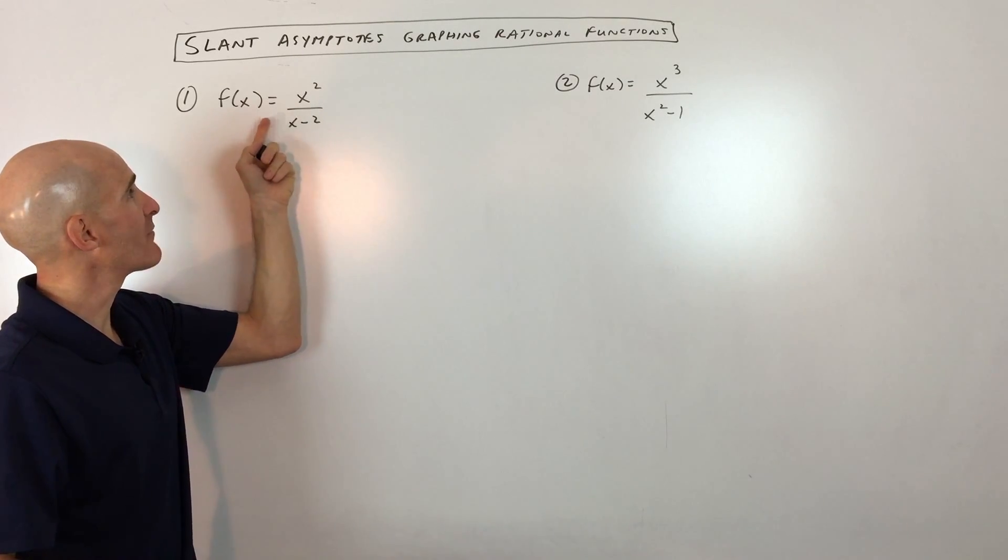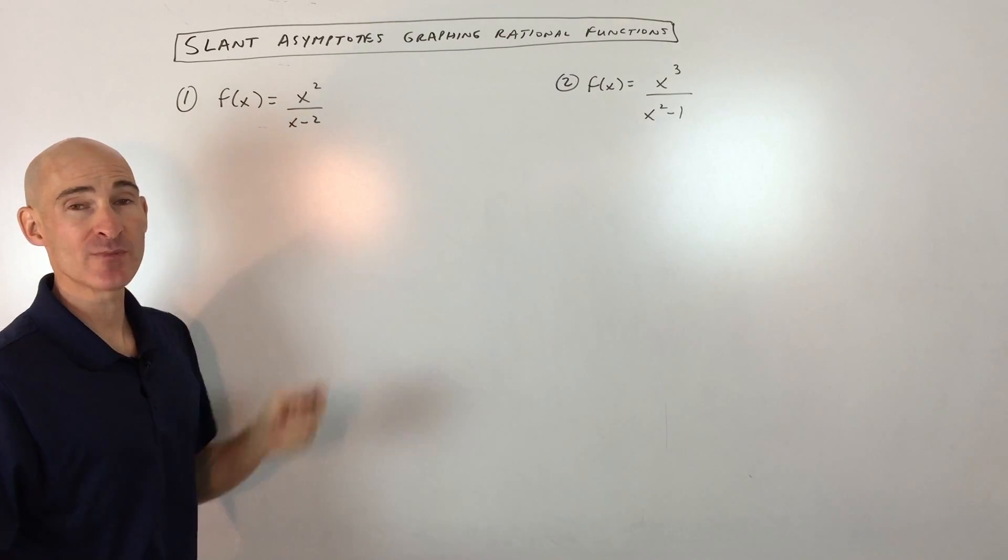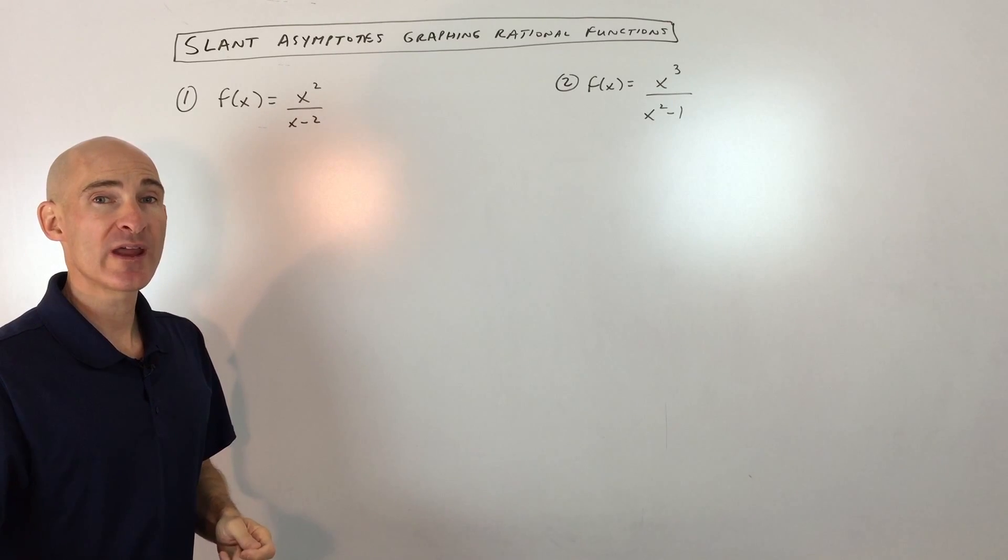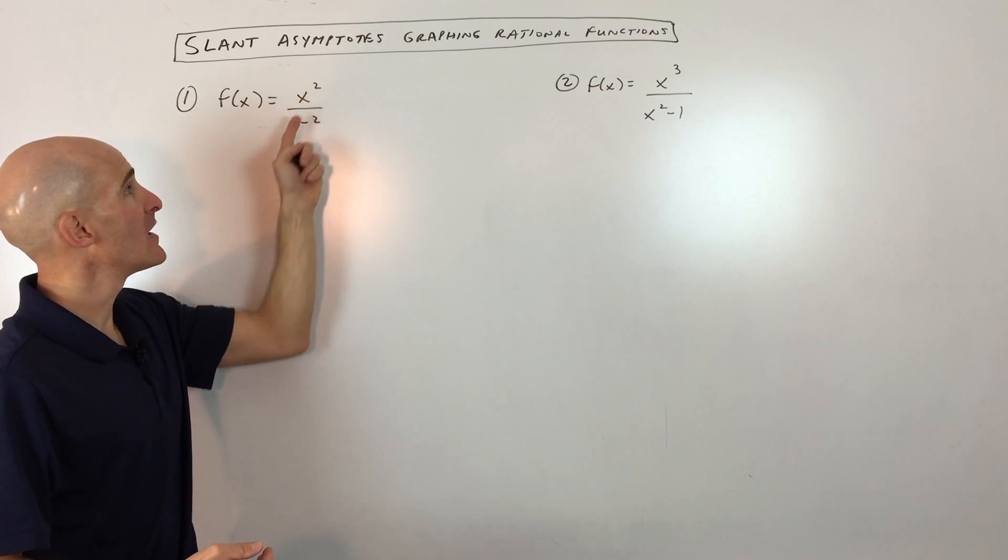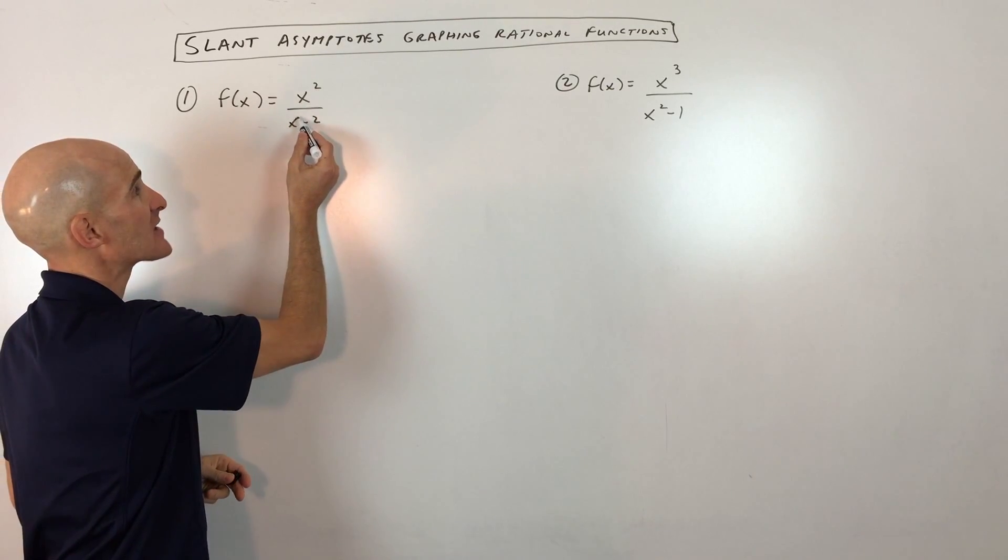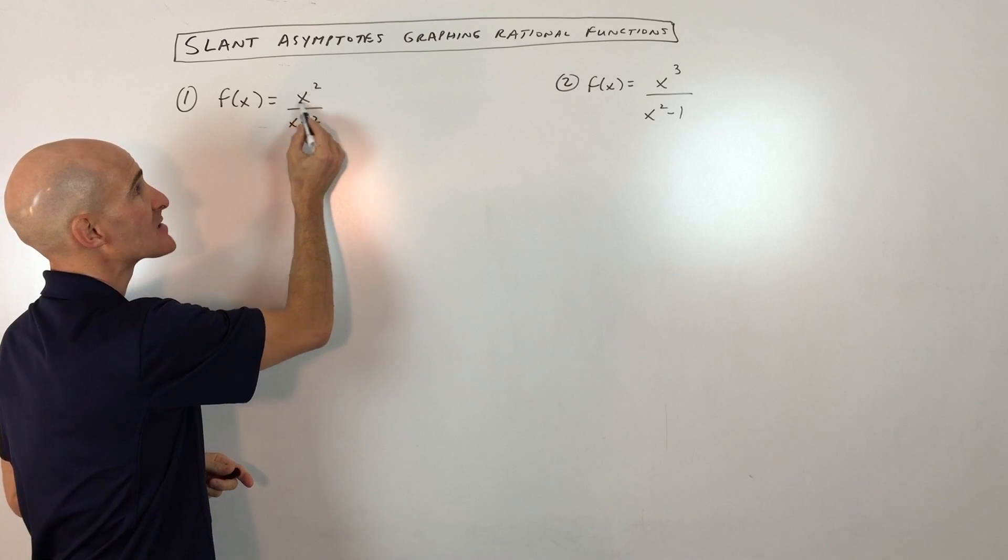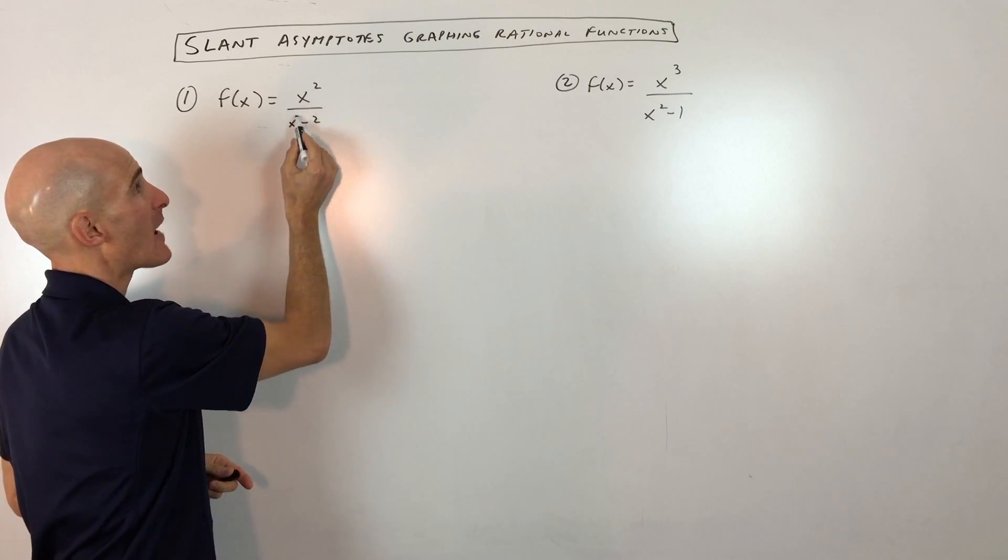Say they give us a function like this: f of x equals x squared over x minus 2. The way that we know it has a slant asymptote is because the highest degree term in the numerator is greater than the highest degree term in the denominator. You can see this is x squared, this is x to the first. This highest degree term is greater by 1.